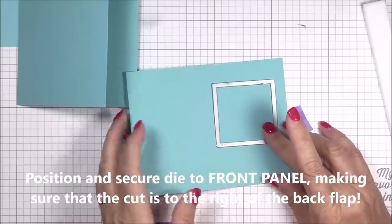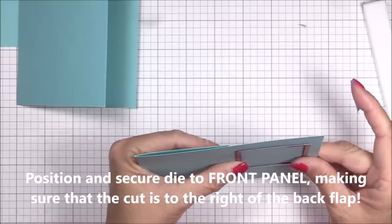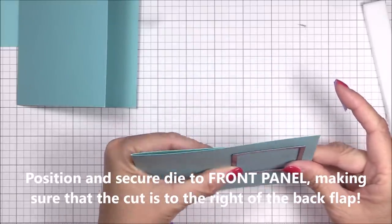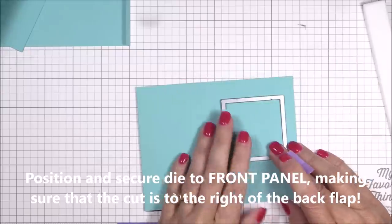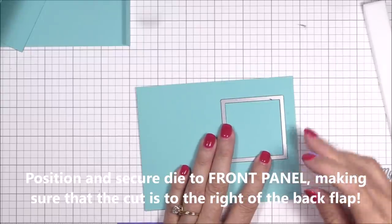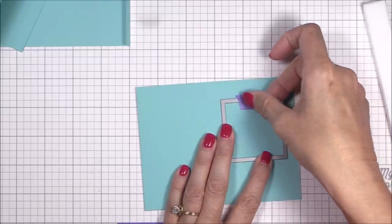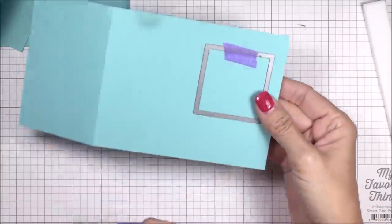This next step is also important to making sure that this technique goes off without a hitch. I'm using the square die from the square shaker window and frame dynamics to cut my apertures. It has the exact same inside square measurement as the Polaroid shaker frame die.